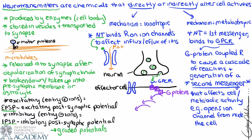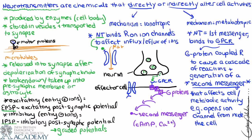When an action potential arrives at the synaptic knob, we have depolarization and exocytosis of the neurotransmitter. The neurotransmitter binds to the G protein-coupled receptor, triggering a cascade of reactions. We fast-forward to the generation of the second messenger. Examples of second messengers include cyclic AMP — adenosine monophosphate — and calcium ions. Think of it as a relay race: the first messenger passes the baton to the second messenger.